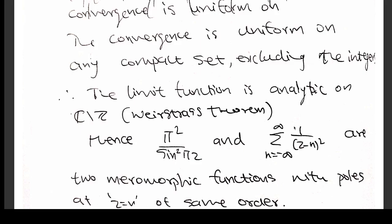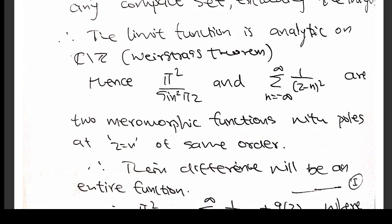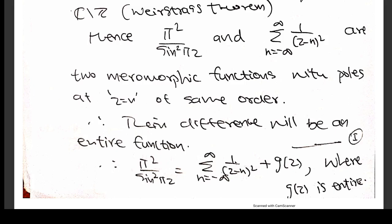So you have two functions: π²/sin²(πz) and the infinite series limit. Both are meromorphic with poles at z = n of the same order. Therefore, their difference will be an analytic function. You can write this as π²/sin²(πz) equal to this series plus g(z), where g(z) is entire. Our aim is to prove that g is identically 0, and thereby obtain an infinite series representation for π²/sin²(πz).